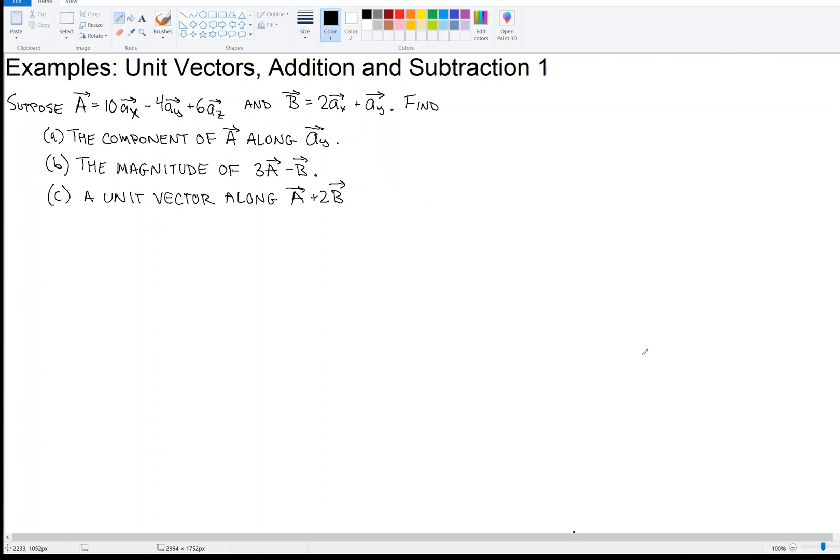We're talking about unit vectors and the addition and subtraction of vectors. I've got an example here. Suppose that vector A is 10 AX minus 4 AY plus 6 AZ, and vector B is twice AX plus AY.